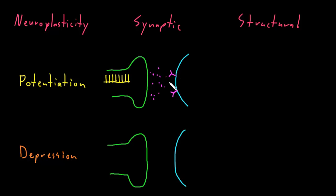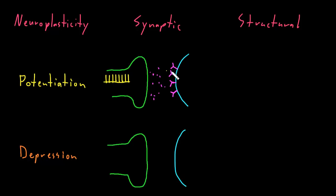Or the change may occur on the postsynaptic membrane. There may be an increase in the number of neurotransmitter receptors in the postsynaptic membrane, or changes to the types of neurotransmitter receptors or the responses that occur through second messengers, so that for any given amount of neurotransmitter released from the axon terminal, a bigger response is seen in the target cell because it's much more sensitive to the neurotransmitter. Either of these changes — more neurotransmitter released or the postsynaptic membrane becoming more responsive — results in an increased response in the target cell per action potential. That would be synaptic potentiation.